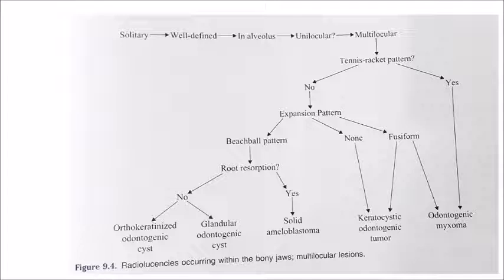Other expansion pattern tumors include keratocystic odontogenic tumor or odontogenic myxoma — it can show a tennis racket pattern or an expansion pattern. Always remember: tennis racket pattern is associated with odontogenic myxoma. These are some of the multilocular lesions.